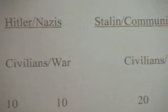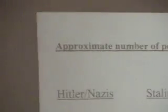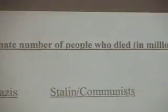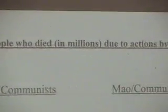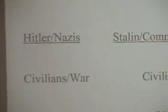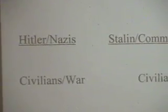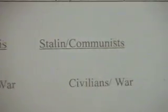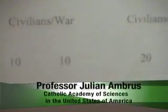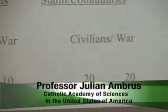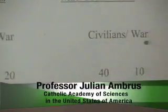If you compare the number of civilians killed to the number of people who died in the war, in Hitler's Nazi outfit maybe about 10 million people died in the war and 10 million civilians were killed. He killed about 20 million total, and the war in Russia killed another 20. Mao holds the record with 40 million civilians killed, but only 10 million in the war.